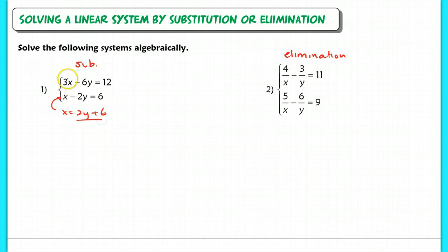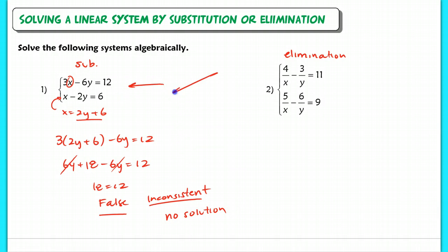Okay, so we plug that in. We're going to plug this in for x here. So we have 3 times (2y plus 6) minus 6y equals 12. When I solve and distribute this linear equation, I end up getting 18 equals 12. So this is a false statement. Because it's false, this means that this is an inconsistent system with no solution because these two lines would actually be parallel.